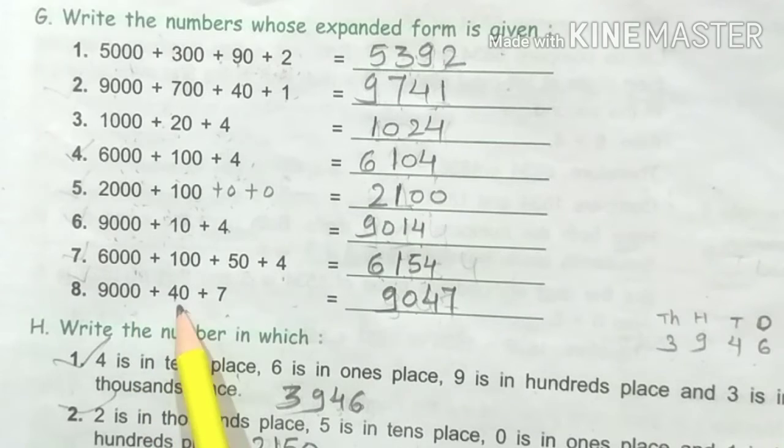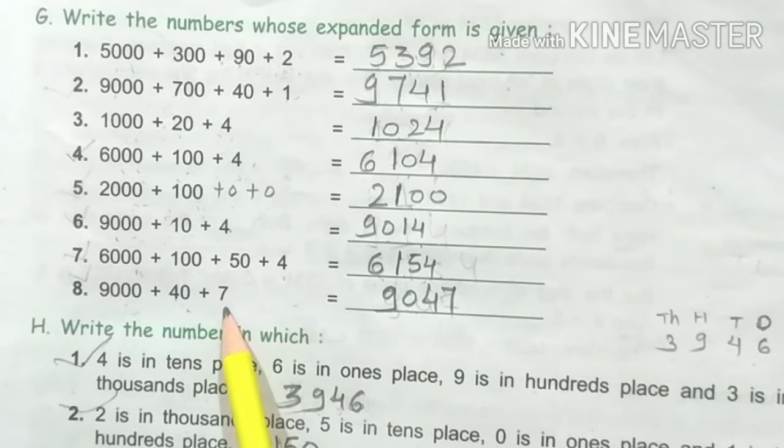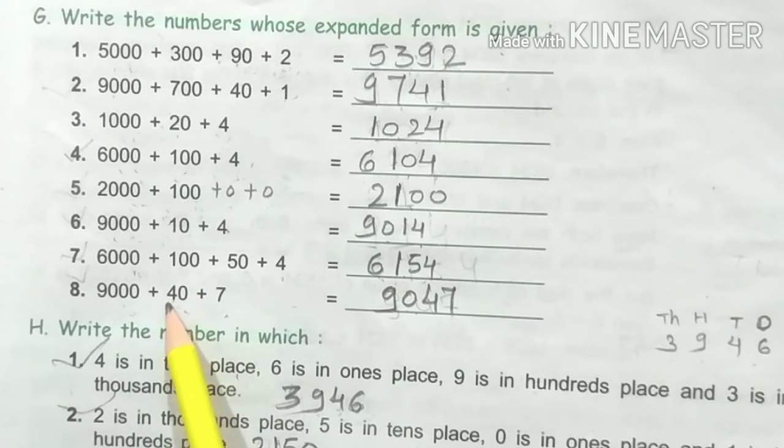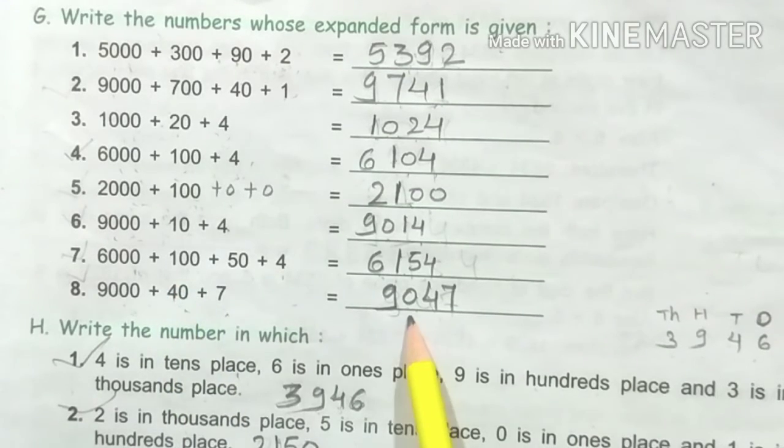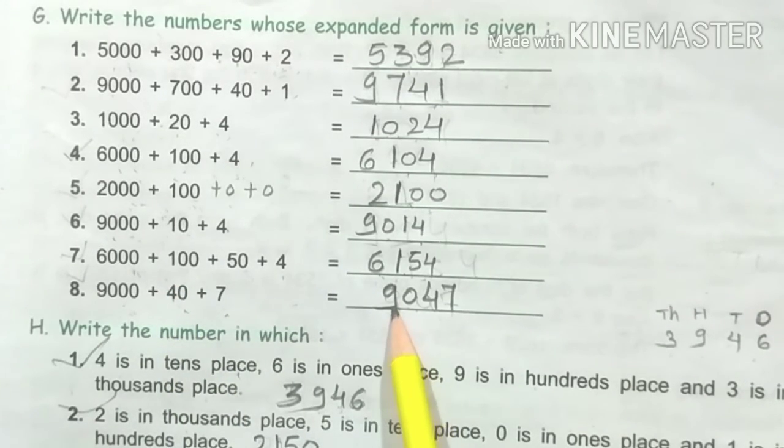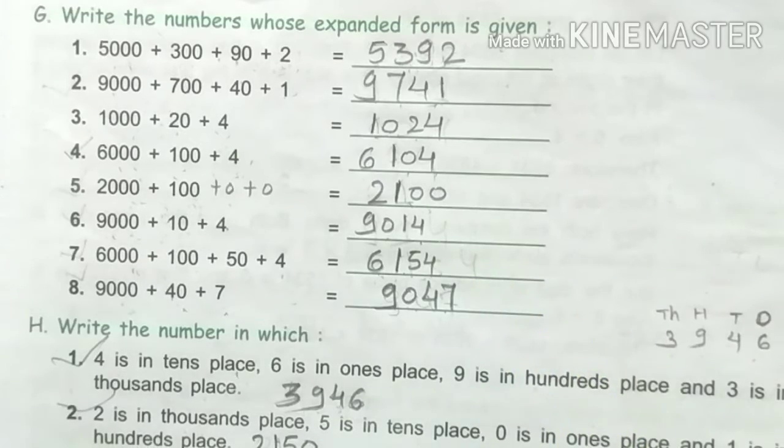Next, 9000 plus 40 plus 7. Here we have hundreds which is missing, so we can put 0 here: 9047.